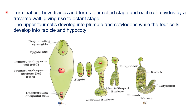Then the terminal cell divides and forms a 4-celled stage, and each cell divides by a transverse wall giving rise to the octant stage. Further mitosis division in the terminal cell results in a round structure — this is the undeveloped globular embryo. From this undeveloped embryo, further division occurs and it converts into a heart-shaped embryo.